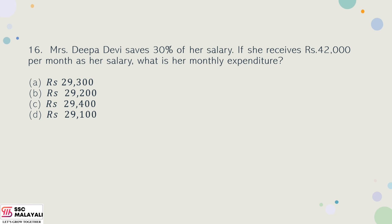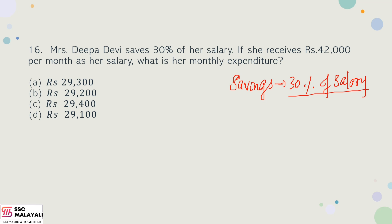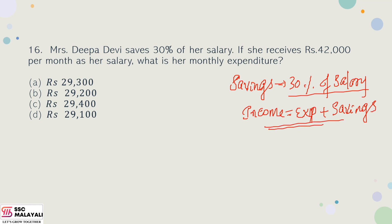16th question: Mrs. Deepa Devi saves 30% of her salary. If she receives Rs. 42,000 per month as her salary, what is her monthly expenditure? Income equals expenditure plus savings. Savings is 30% of salary, so expenditure is 70% of income, that is 70% of 42,000.